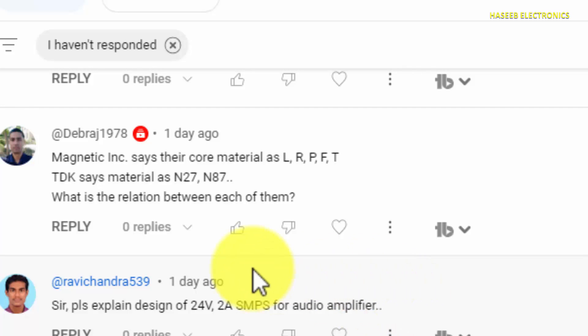Assalamu alaikum wa rahmatullahi wa barakatuhu friends, welcome back to my channel. Today we will see comparison between ferrite cores. My viewer is asking: Magnetics Incorporation says their core material as L R P F T, TDK says material as N27 and 87. What is the relation between each of them?